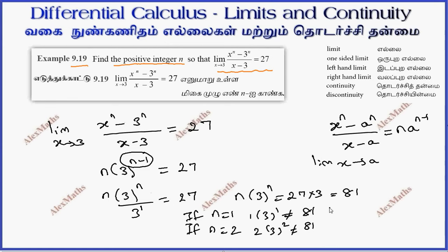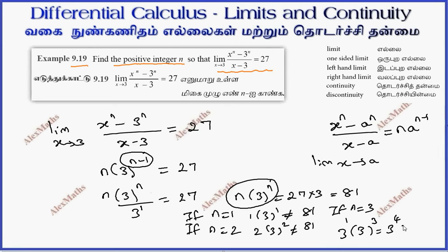If n = 3, then 3 into 3 power 3 equals 3 power 4, and 3 power 4 is 81. So this value of n satisfies the equation. Therefore, n is equal to 3.